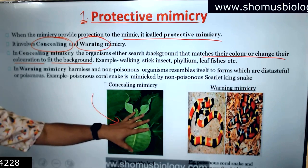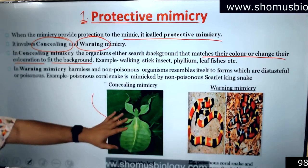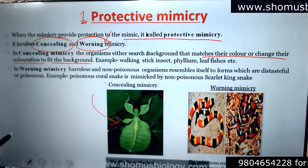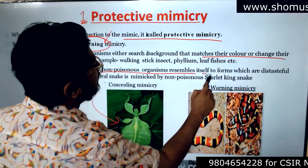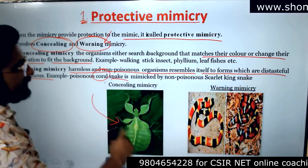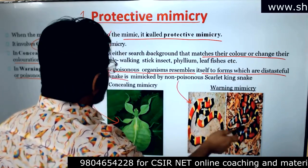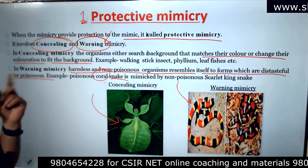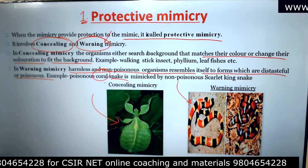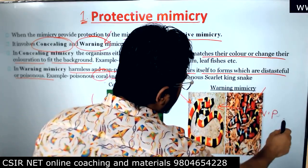These organisms become camouflaged to the background of a leaf, being protected from being eaten by insect eaters. The second type of protective mimicry is warning mimicry, where a harmless, non-poisonous organism resembles itself to appear distasteful or poisonous. An example is the poisonous coral snake — the scarlet king snake is non-poisonous but looks like the coral snake, which is poisonous.